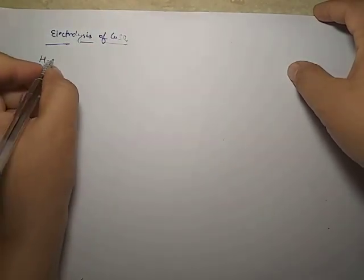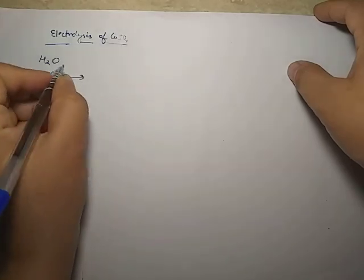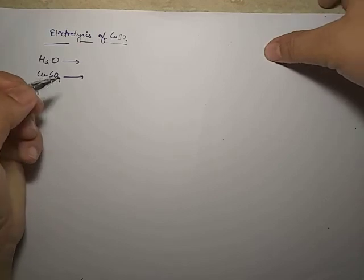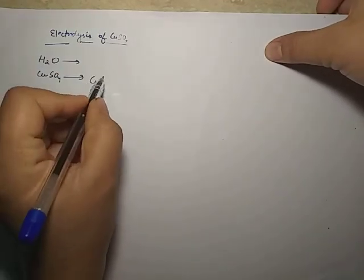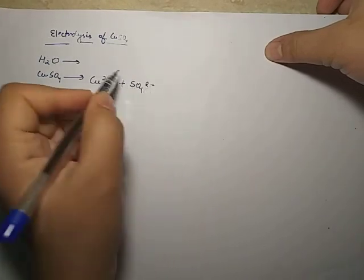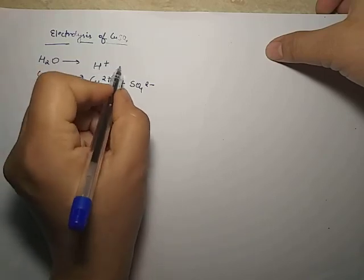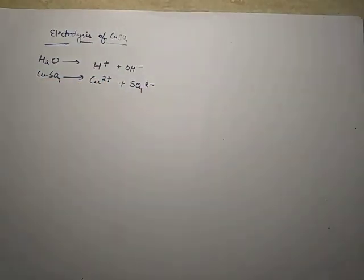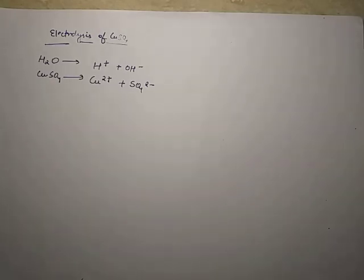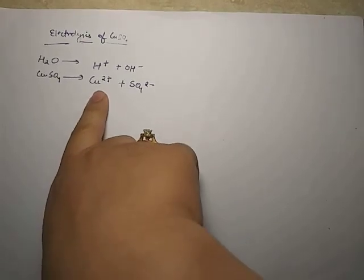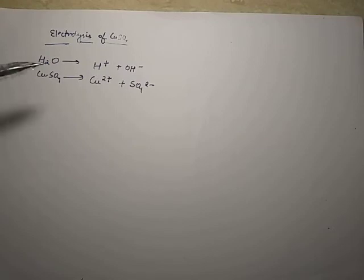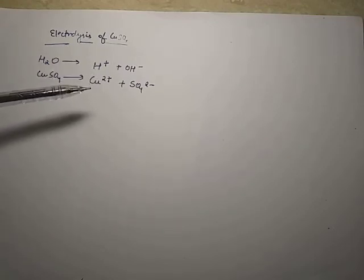In copper sulfate solution there are two molecules: H₂O and copper sulfate. When dissolved, copper sulfate dissociates into Cu²⁺ and SO₄²⁻. Similarly, H₂O breaks into H⁺ and OH⁻ ions. As explained in my previous lecture on the electrochemical series, copper has more reduction potential as compared to H⁺ ion.